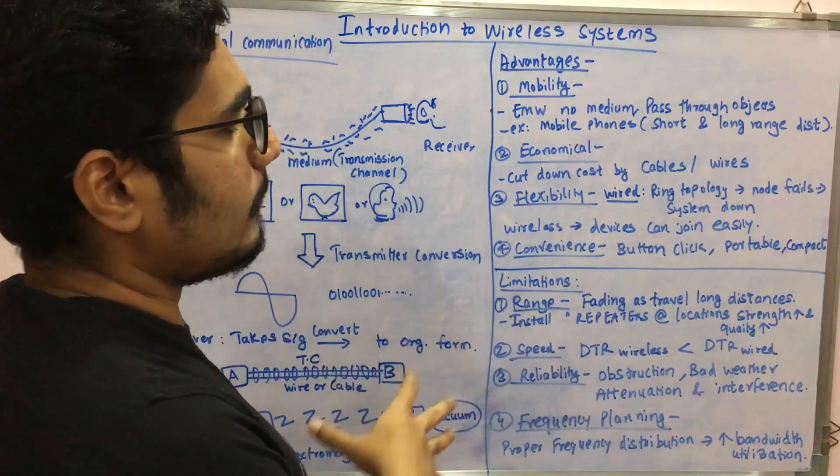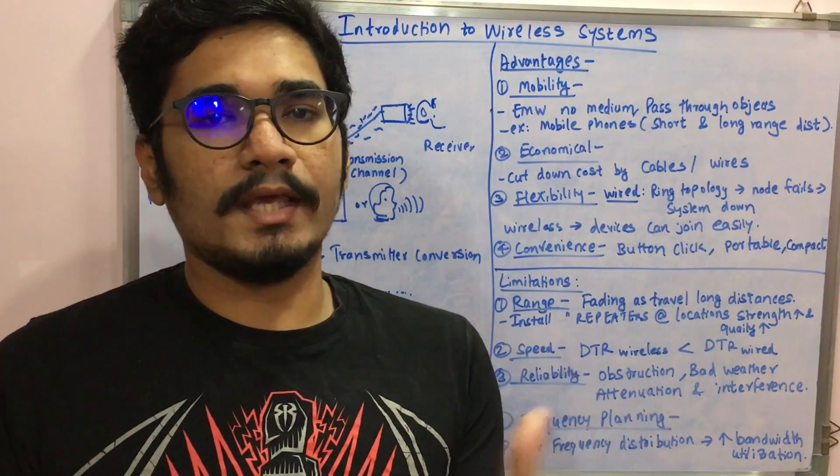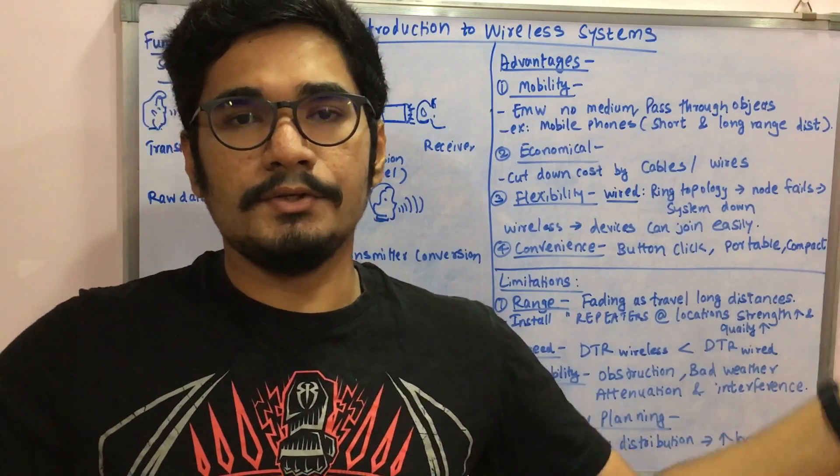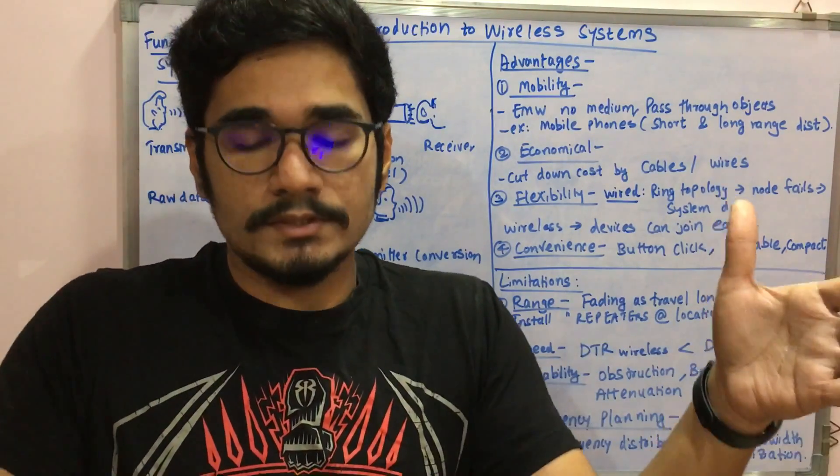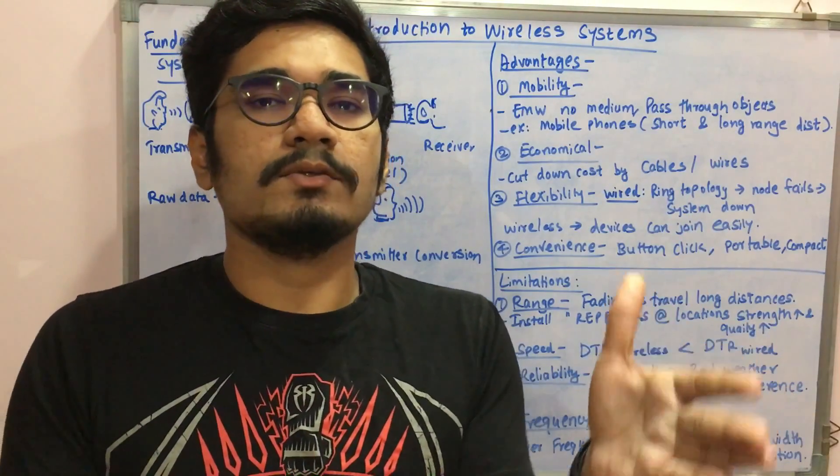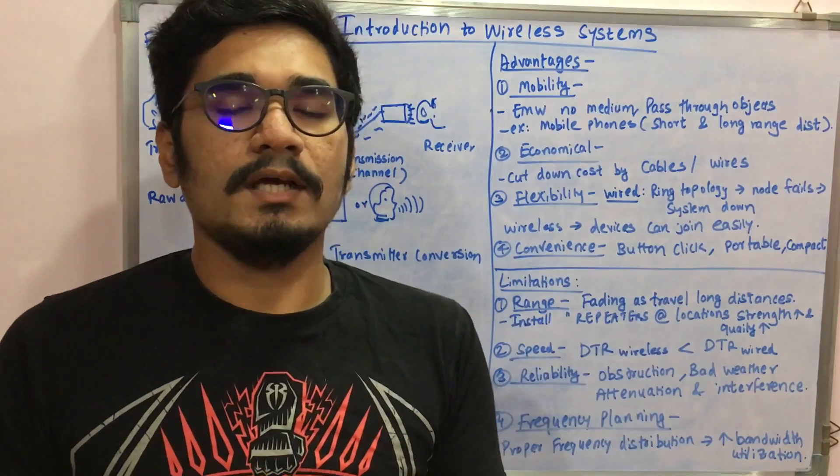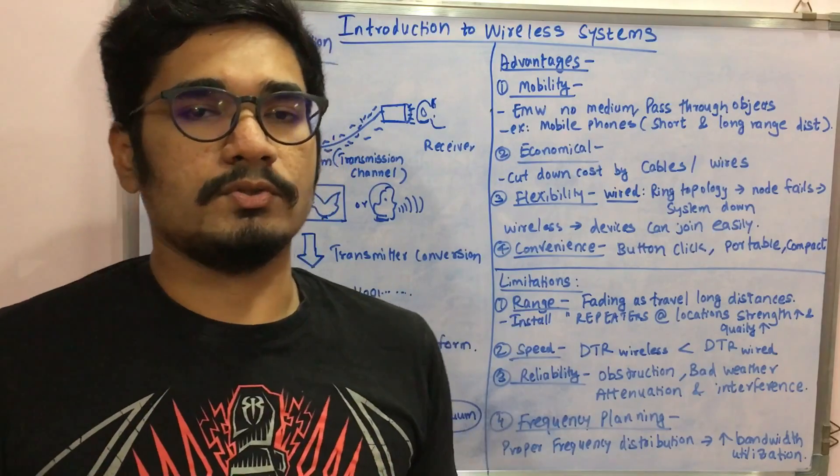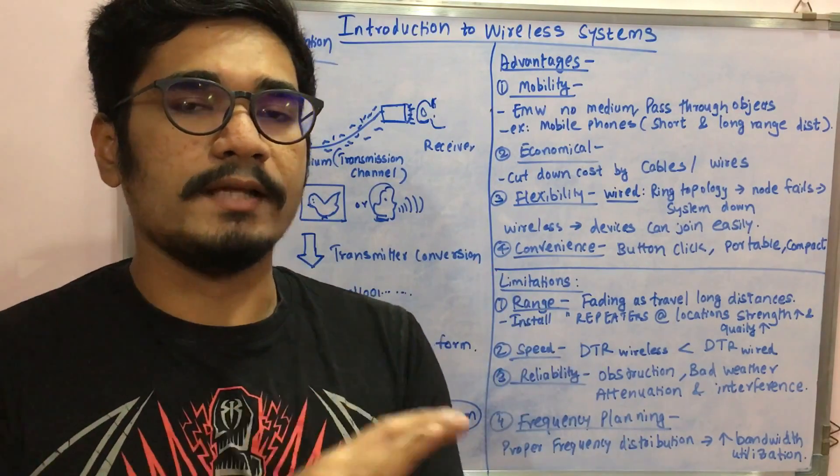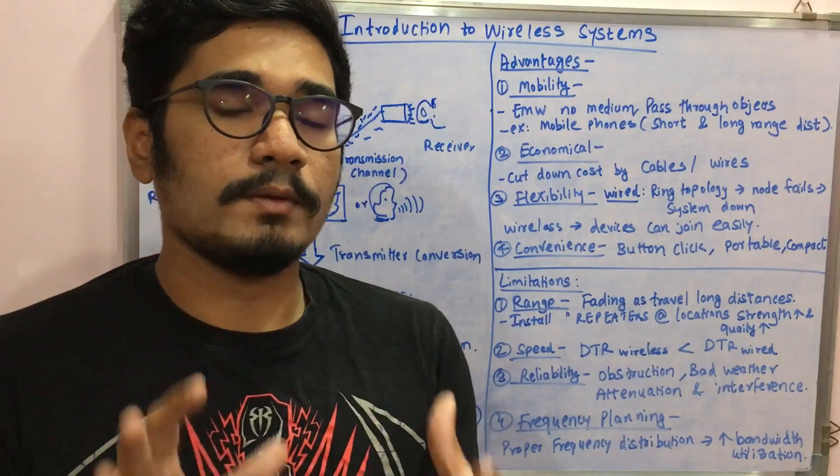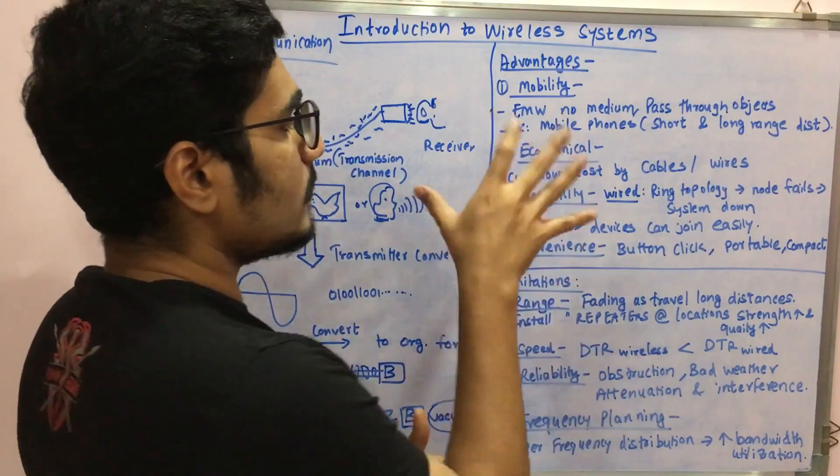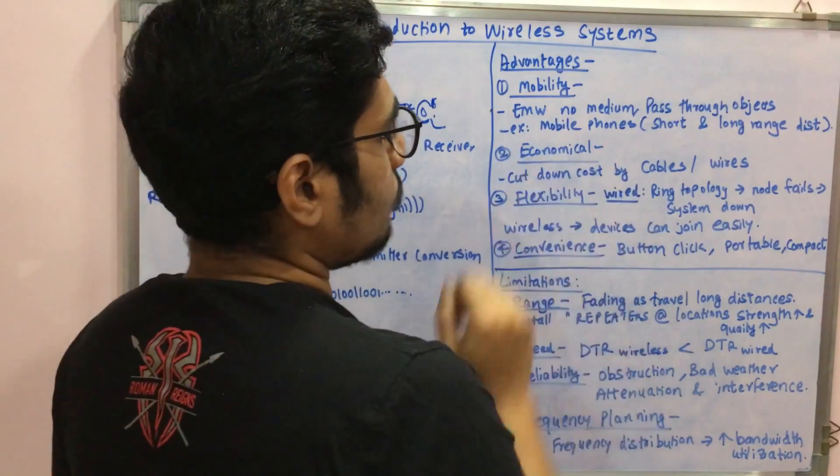That thing is just cancelled out in this wireless systems and it just completely works over by the electromagnetic waves. Then is the flexibility. In wired system, for example, if you want to add a device into the network and it's connected by a ring topology, that is a ring network topology, then at some point of time if something goes wrong, if node fail happens in the system, considerably it goes down.